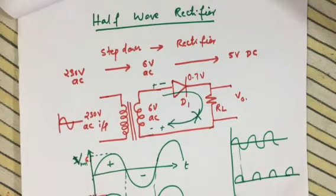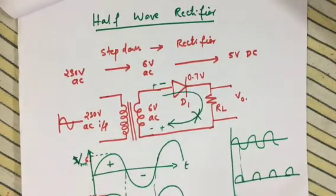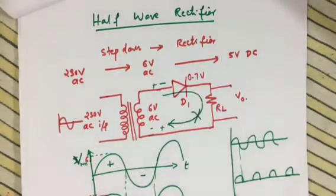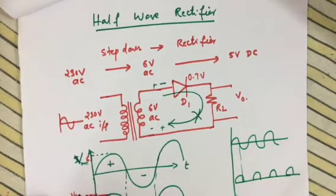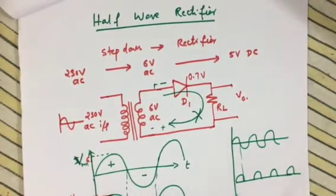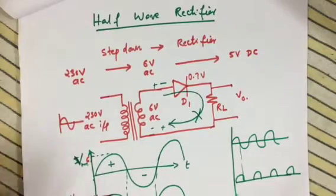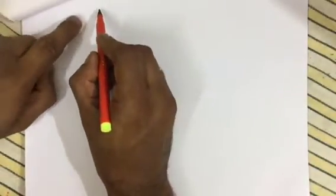This 0.7 voltage drop is not always considered when drawing the waveform graph, but if we go deeper into the analysis we consider it. The output peak is actually Vm minus the cut-in voltage of the diode, V-gamma. Now let us move on to the full wave bridge rectifier.